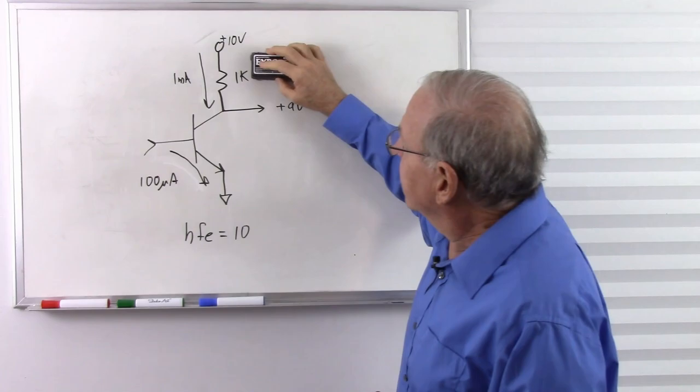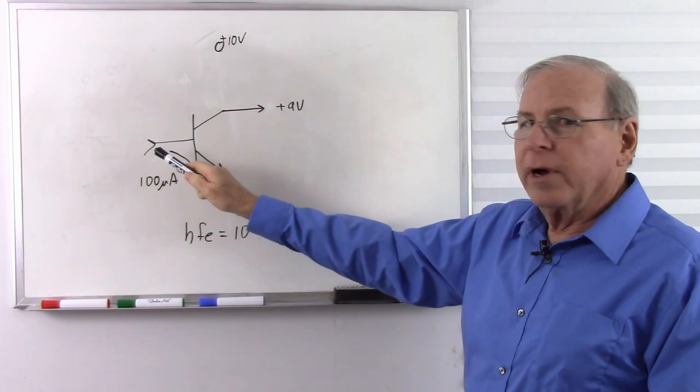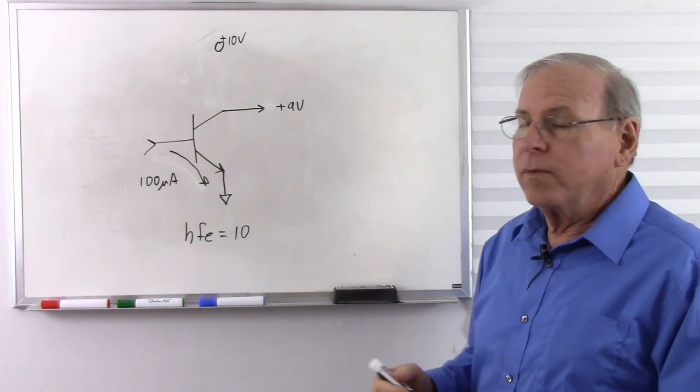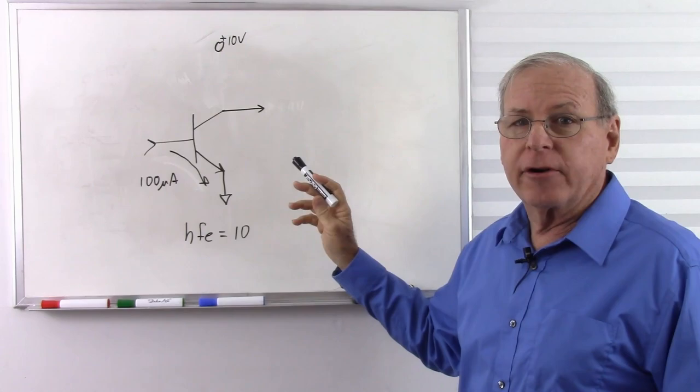Now, let's remove the collector resistor. Alright, now, I put the 100 microamps in through the base, how much current am I going to get into the collector? Well, first let's get rid of this 9 volts because there's nothing there. How much current am I going to get into the collector?